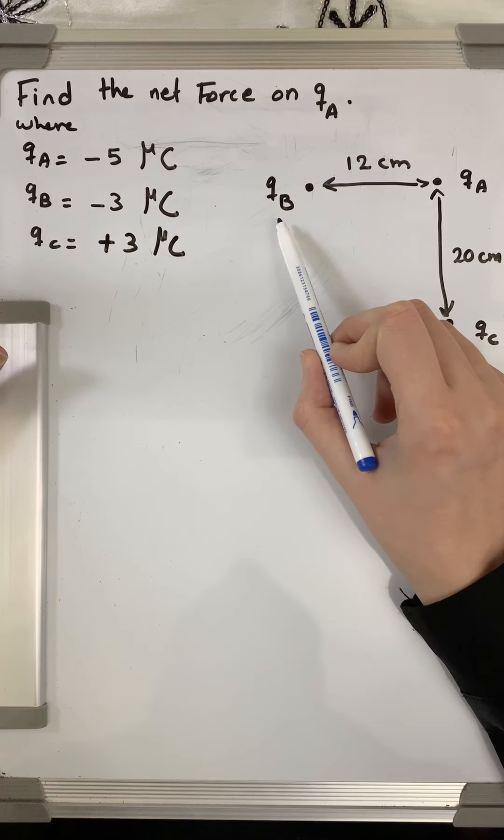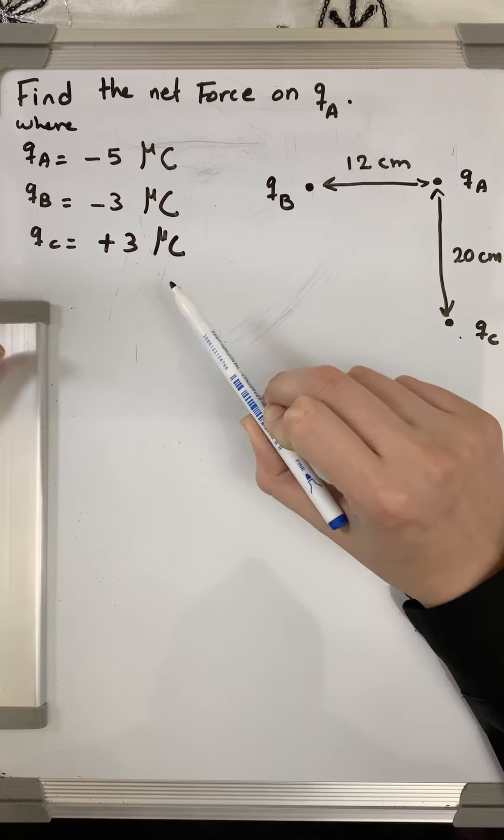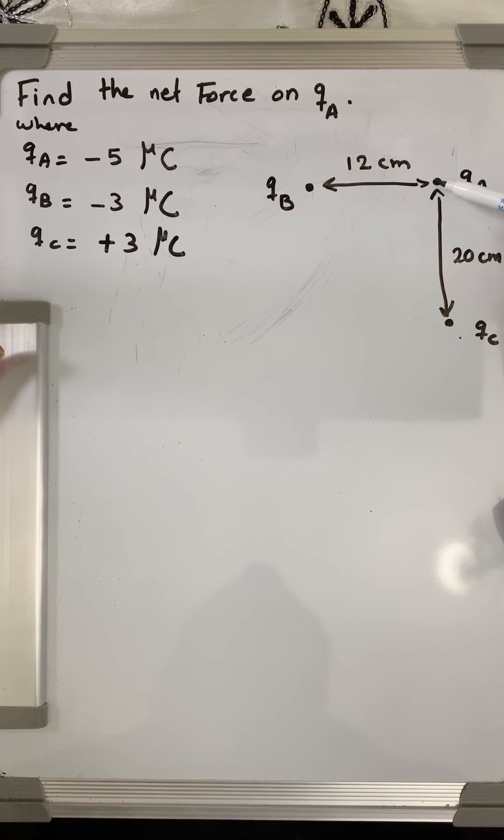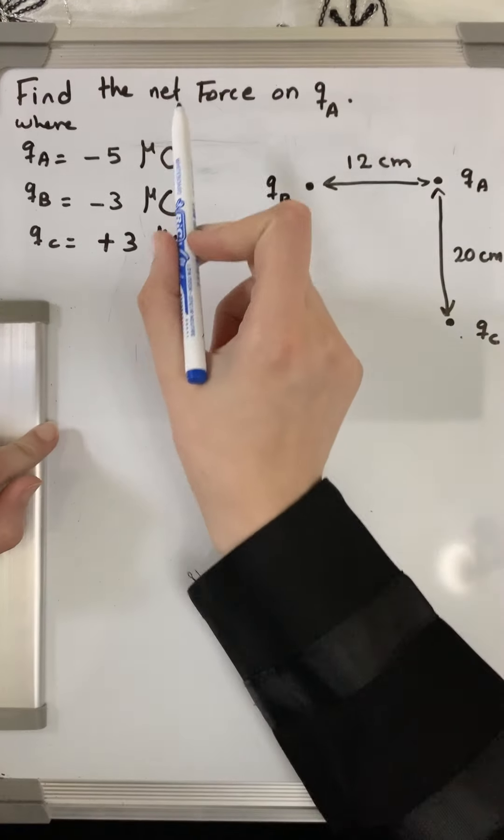to the left of qa, 12 centimeters away. qc is below qa. The distance between qa and qc is 20 centimeters. So all these numbers that you see in black are given for us. We need to calculate the...